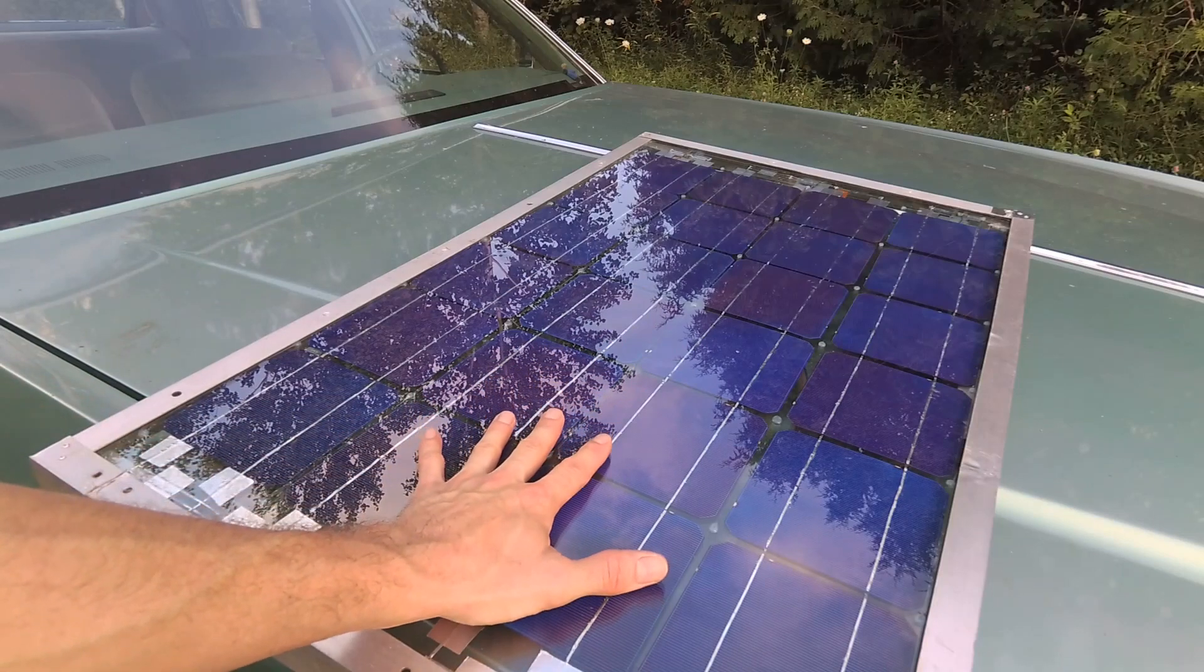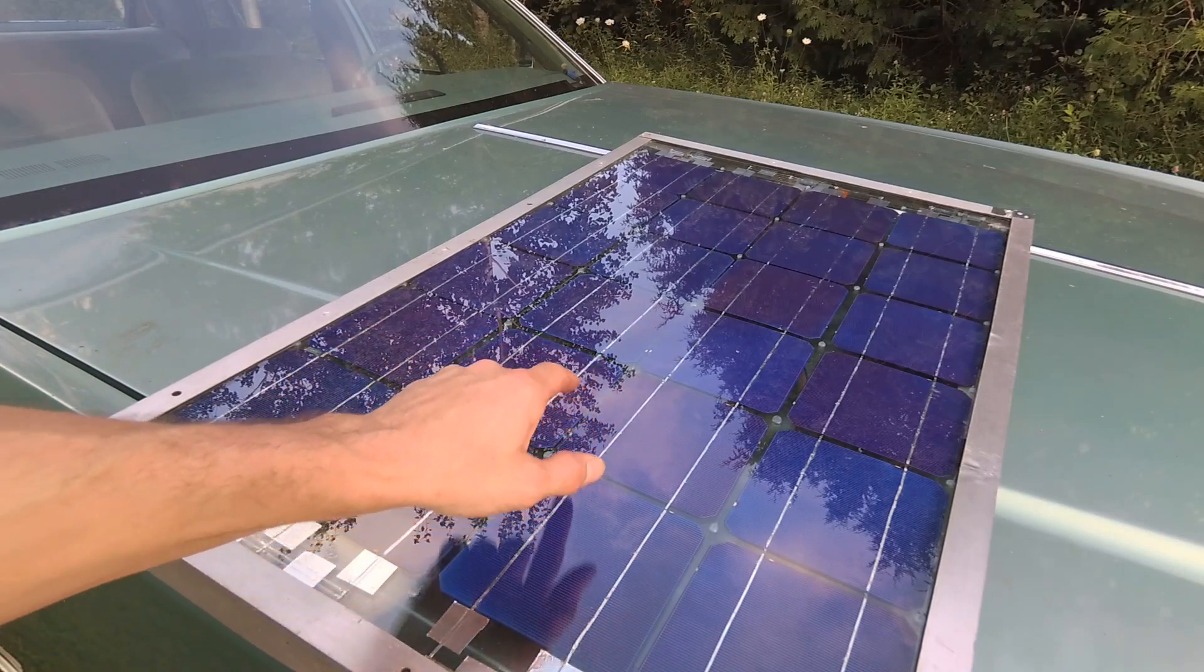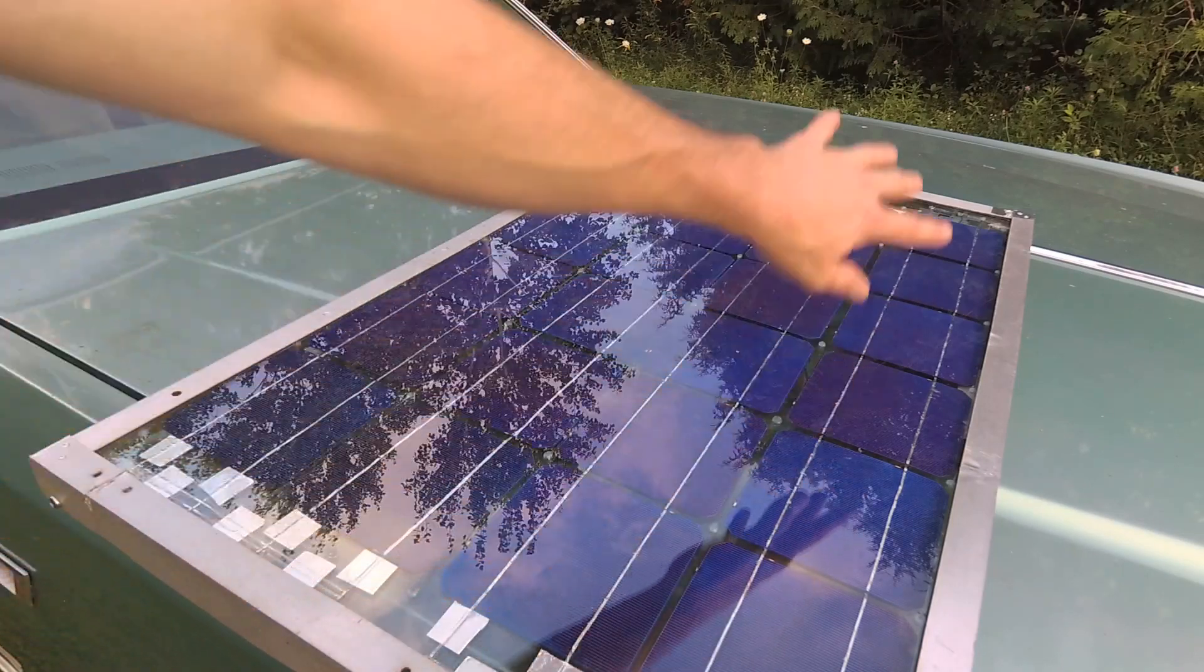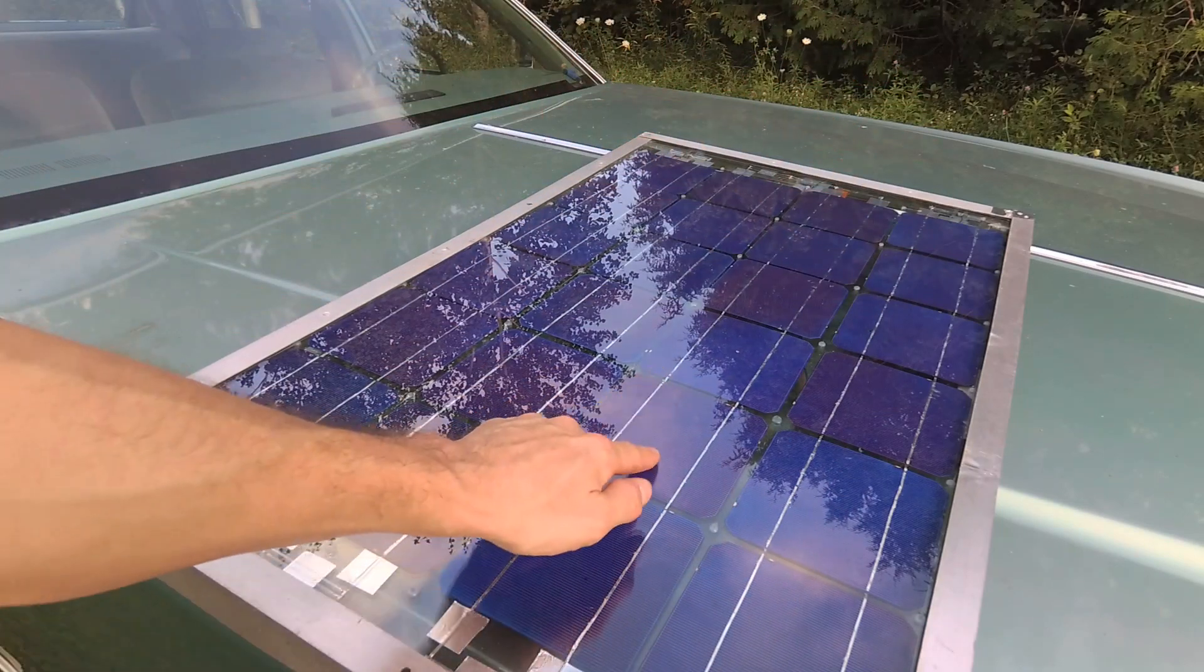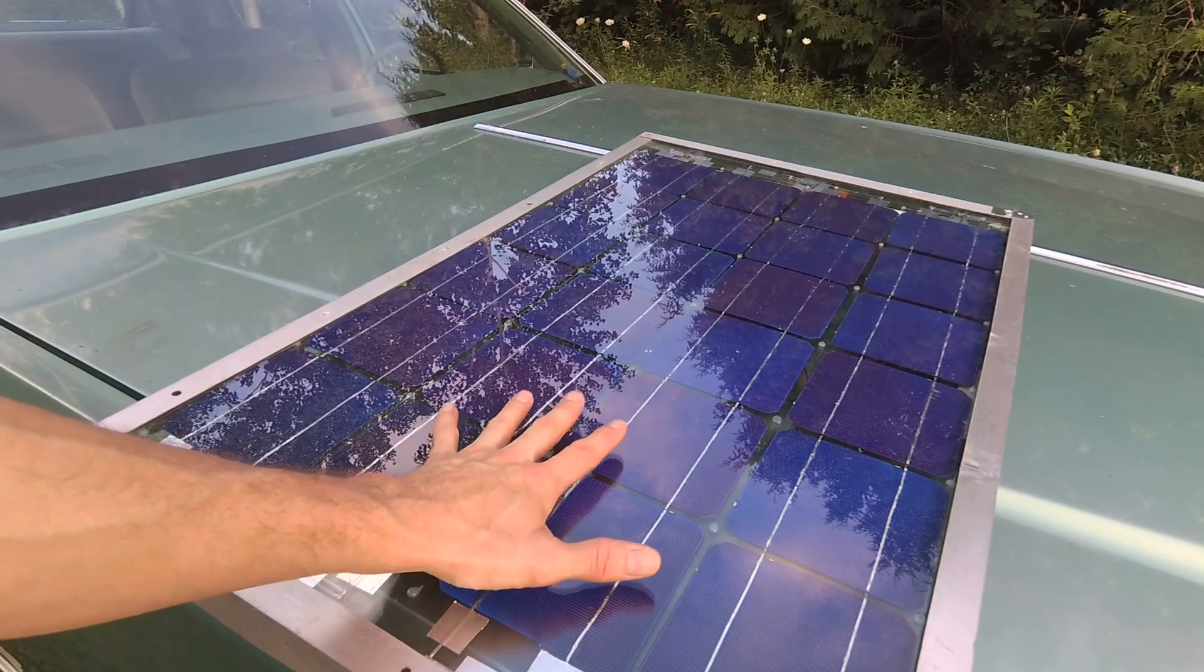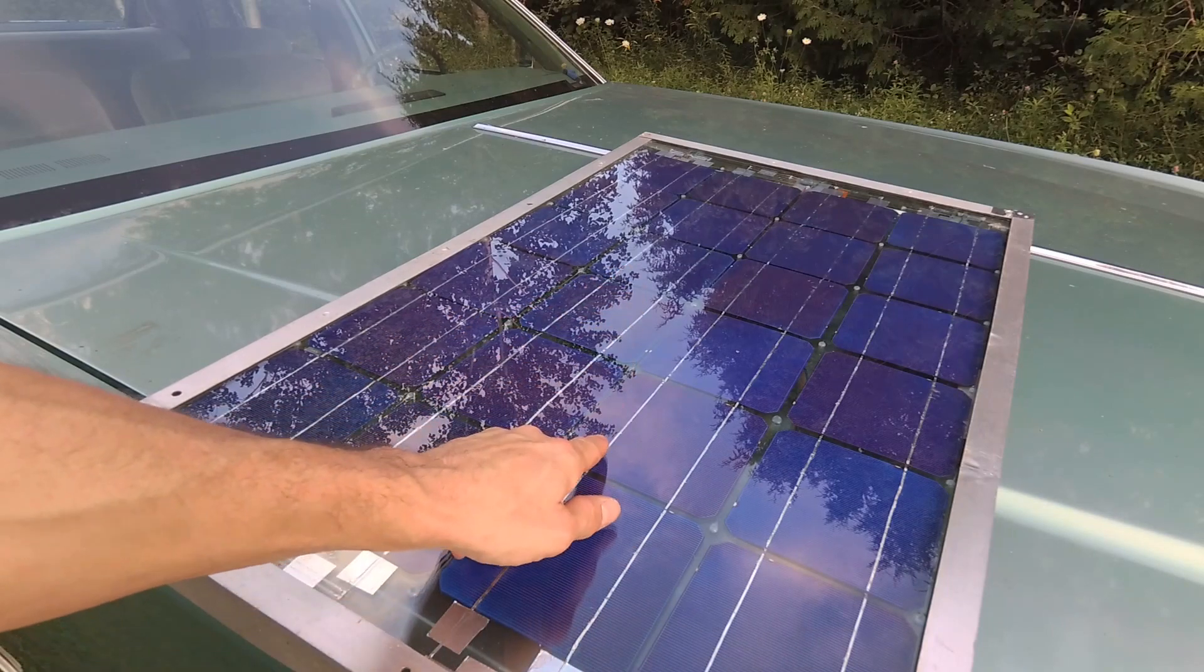The cells here are smaller than the full size six by six, so you can squeeze more in between your glass. They're 2.8 watts, we have here about a 65 watt panel and it puts out about 12 volts.